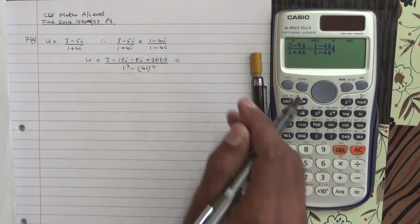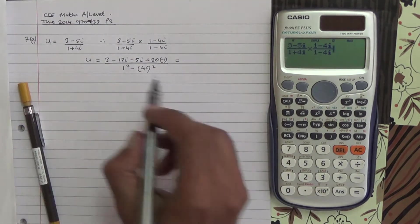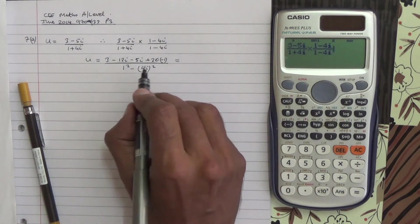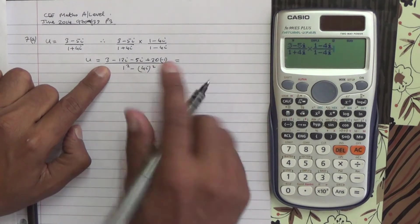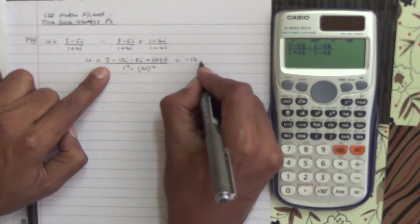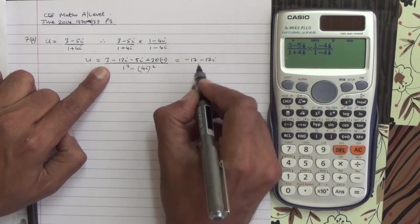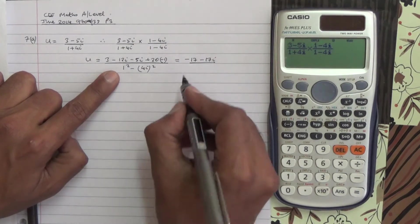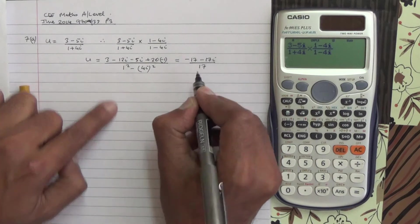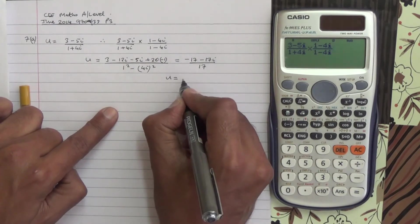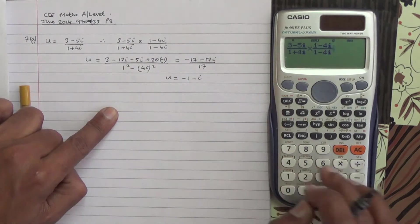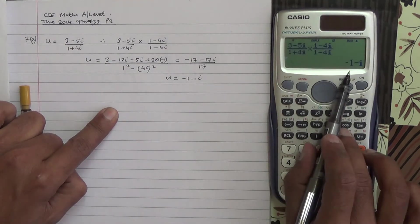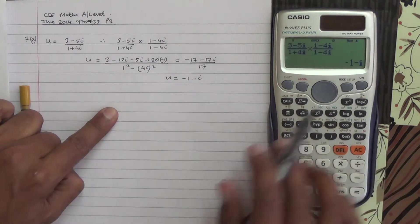That's going to give us: minus 12 minus 5 is minus 17, and 3 minus 20 is minus 17. So we've got minus 17 minus 17i divided by 1 minus minus 16, which is 17. So u is going to be equal to minus 1 minus i. Check it out in the calculator here, and here's the answer: minus 1 minus i. These two correspond.